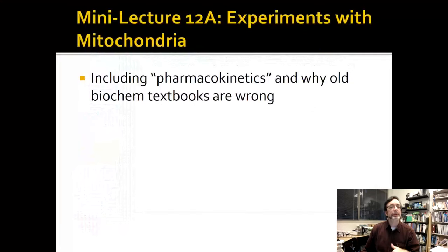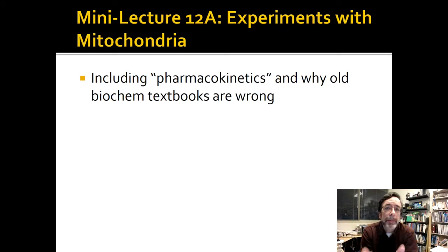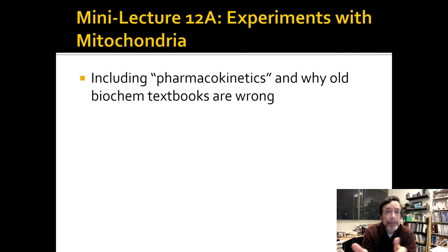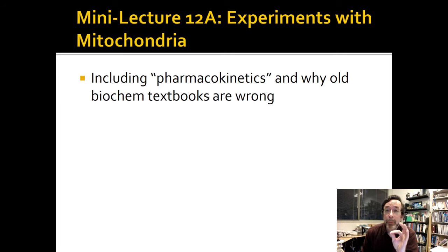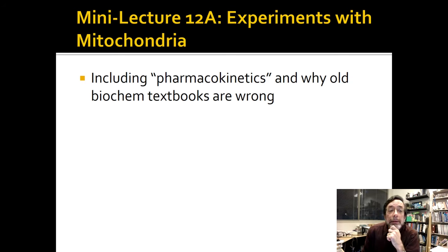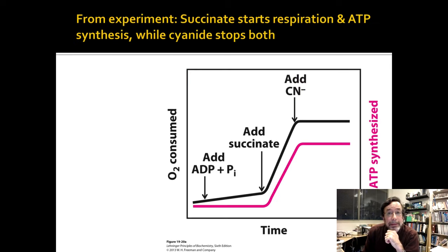This is a very interesting topic because we're going to talk about what experiments you can do when you take mitochondria and put them in a tube, because you have both the electron transfer chain and ATP synthase. So you can mess with the pH, the protons, the electrons — you can do all sorts of things and figure out how mitochondria work. This has to do with the basic way that mitochondria fulfill their role in how life works. It also involves pharmacokinetics, and I'll explain what that is as we go through.